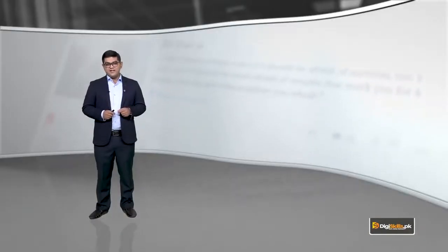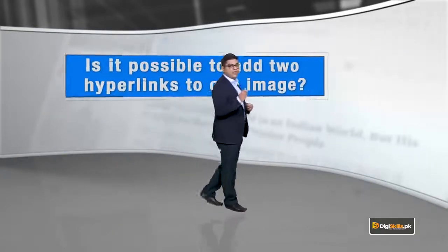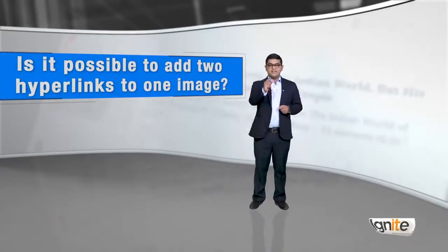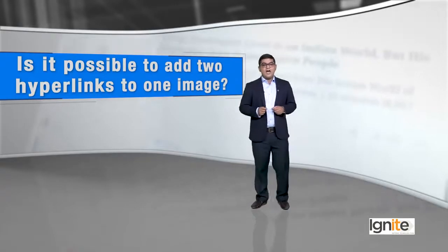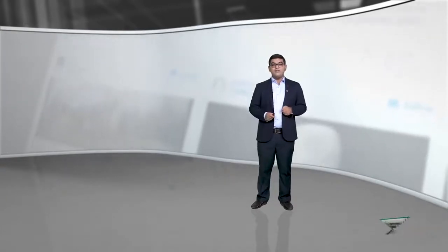Question jo aapke zehan mein yahan pe shayad aaye, jo aap shayad soch bhi rahe ho: ke is it possible to add two hyperlinks to one image? Very interesting question — sochen zara aur mujhe iska jawab khud dein. Kya ek image pe hum do hyperlinks dal sakte hain? The short and sweet answer to that is no. Bilkul usi tarah jis tarah life mein aapke paas kaafi raaste hote hain, lekin aap ek raaste pe hi chal ke apni destination tak pahunch sakte hain — waise hi links are one-way destinations. Ek end pe iski location aap sirf kar sakte hain; image pe bhi usi tarah, you can add just one location or one link.